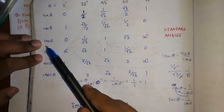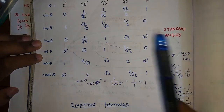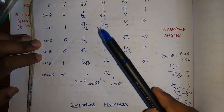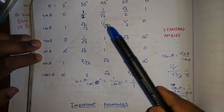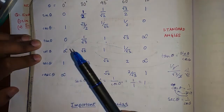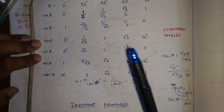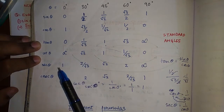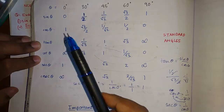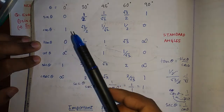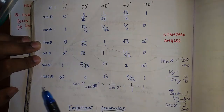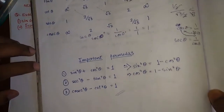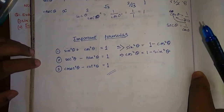For tan 30°, it equals sin 30° / cos 30°. Dividing these fractions gives 1/√3. That's how you find tan θ. For cot θ, just reverse the order of the tan values. For sec θ, take the reciprocal of cos θ for the corresponding standard angle. For cosec θ, take the reciprocal of sin θ.